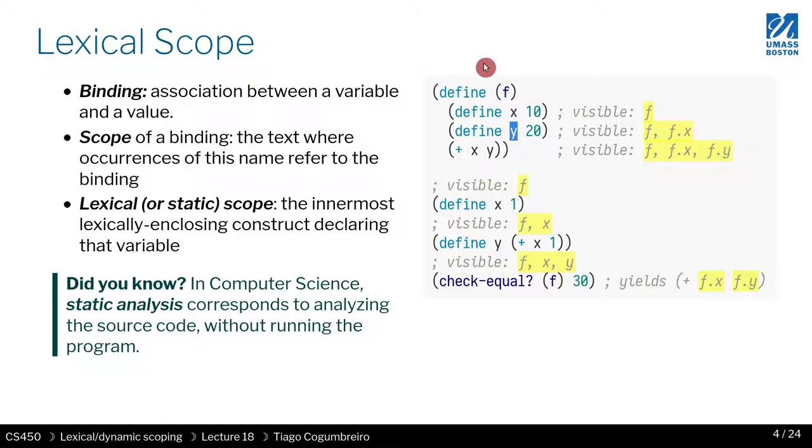This is a very important property because it allows you to just look at a piece of code and have all the information there. The value of x or y does not depend on where you call this function—x always refers to this x and y always refers to this y.